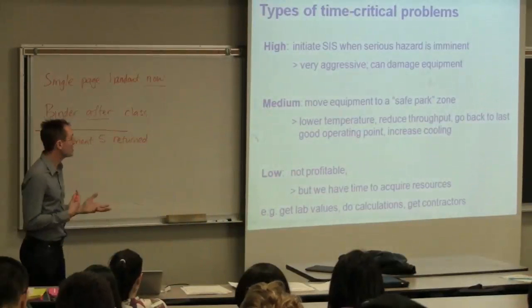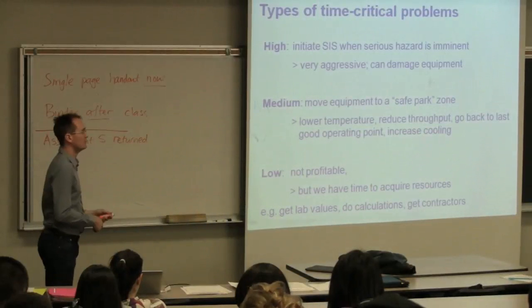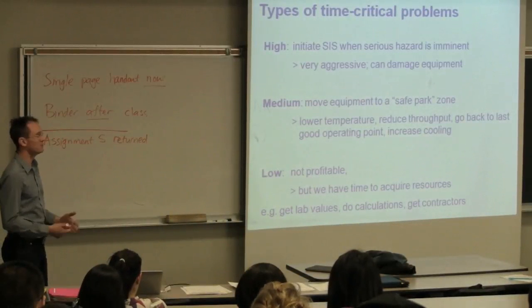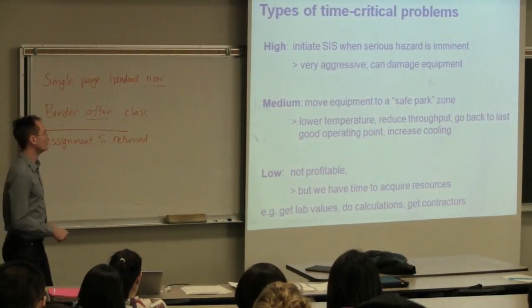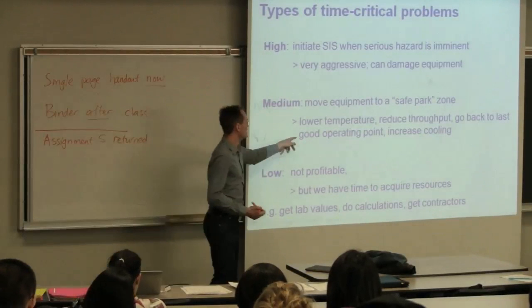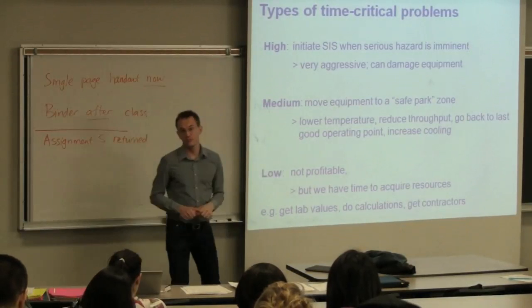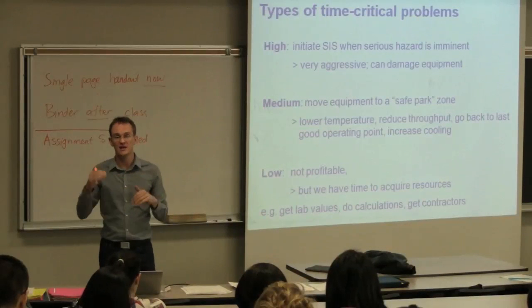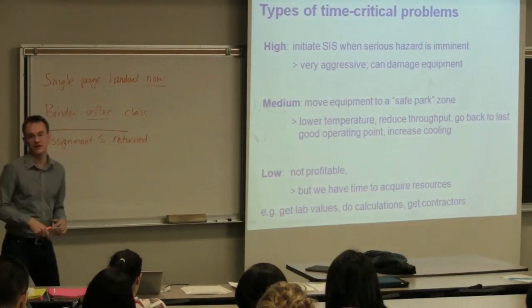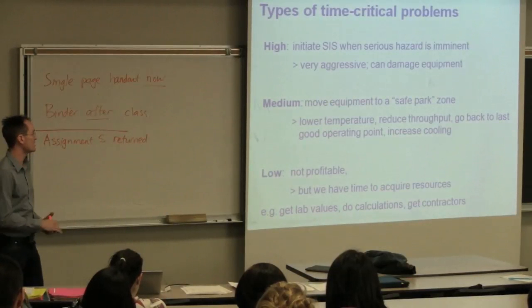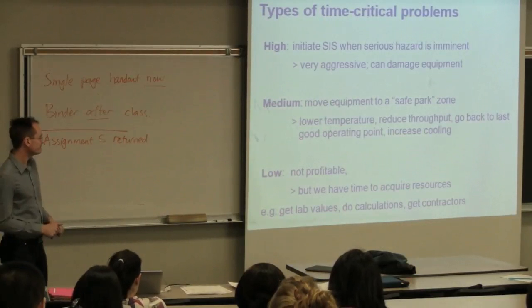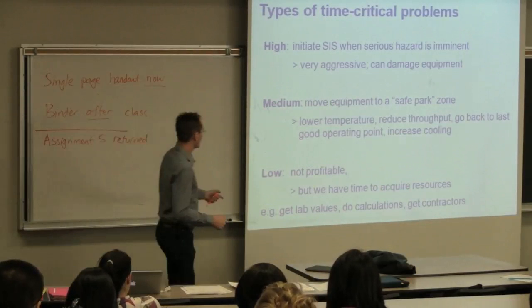A safe park generally involves lowering temperatures, reducing throughput down to a lower scale, say 50% or 25%. You go back to a last known good operating point. For example, in this case study we're looking at right now, where we've gone and increased the flow steadily, as Matt suggested, let's move back down to that low flow rate. Go back down to that last good operating point or increase cooling to any systems that are generally heated.